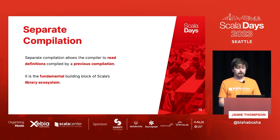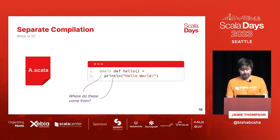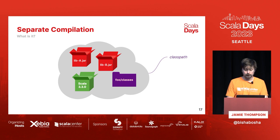Separate compilation is basically what allows the compiler to know about definitions that were compiled previously, and it is the fundamental building block of the Scala library ecosystem. For example, in a hello world `a.scala` file, you're already referencing things that don't exist in the source file — the `main` annotation and the `println` definition. These come from the class path, meaning they were compiled in the past and we can reuse their stored signatures to resolve things.